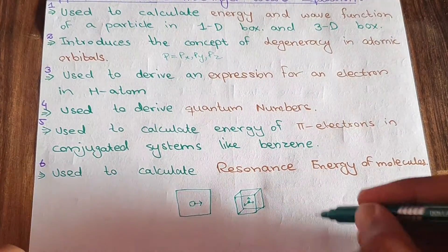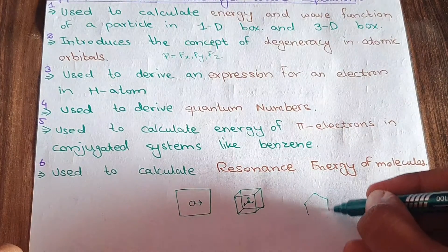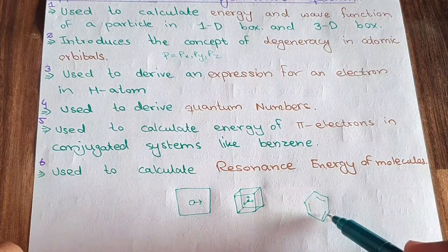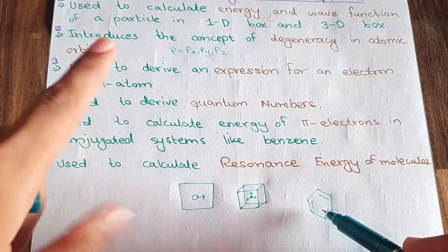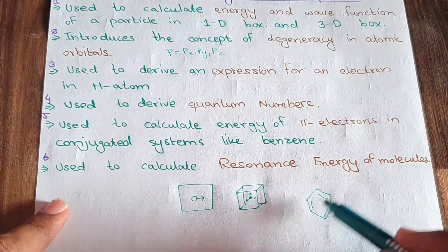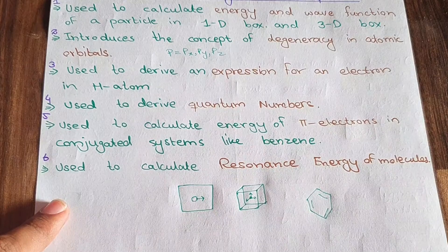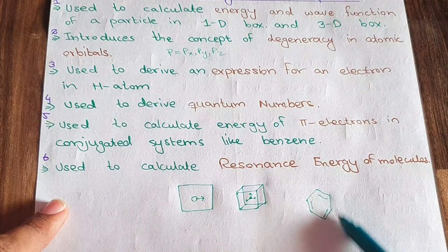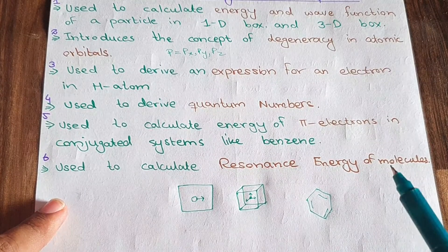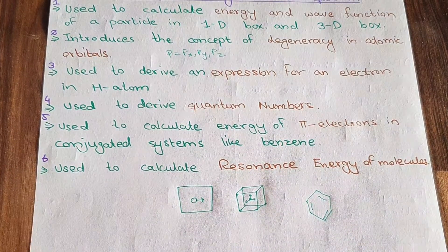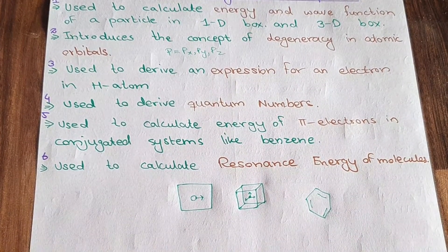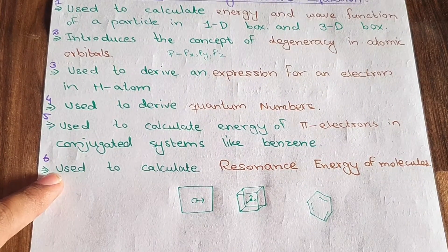Point number five: the Schrödinger wave equation is used to calculate the energy of pi electrons in conjugated systems like benzene. Benzene has double bonds that form a pi conjugated system. We take benzene as an example because it has a perfect conjugated system, so we can use the Schrödinger wave equation to calculate the energy of its pi electrons.